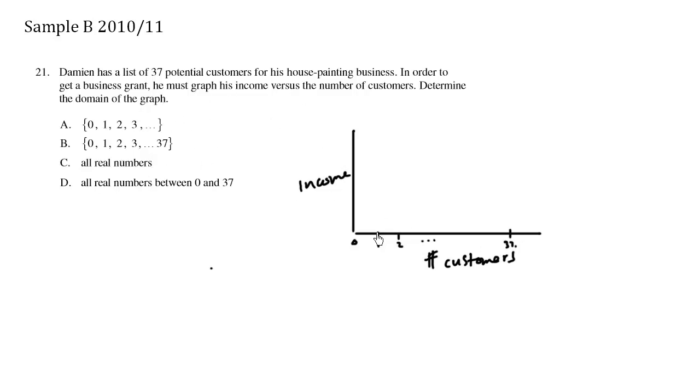Now in terms of this graph, the domain is going to be the possible x values or the possible number of customers. And the possible number of customers can be either 0, 1, 2, all the way to 37.